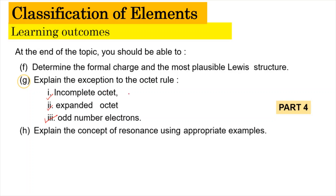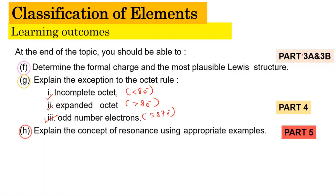For the incomplete octet, the central atom will have less than 8 electrons. For the expanded octet, the central atom will have more than 8 electrons. Meanwhile, for the odd number electron, the central atom will have an odd number — which is 5 or 7 electrons respectively — in the central atom. The learning outcomes F and H will be covered in Part 3a, 3b, and Part 5.